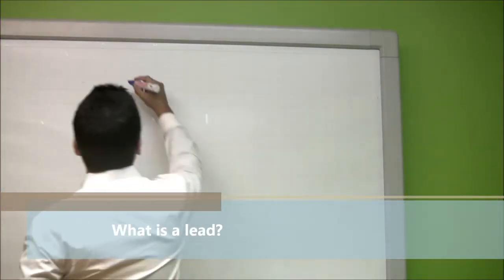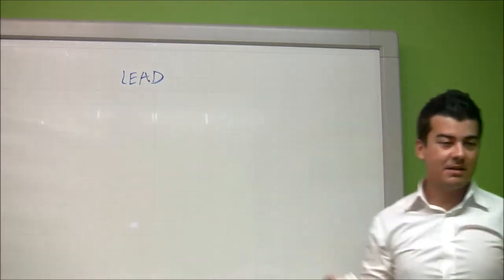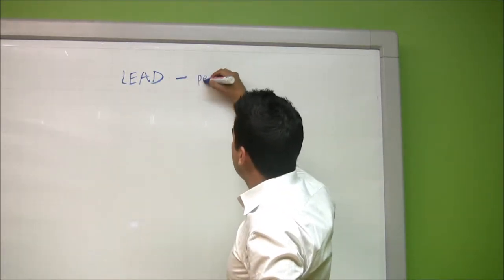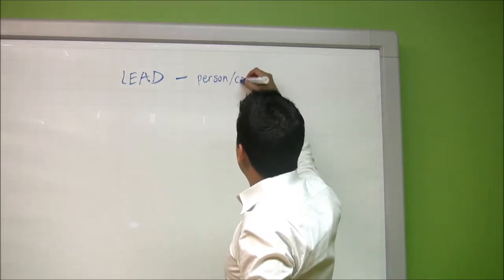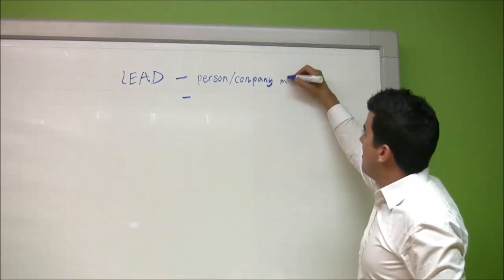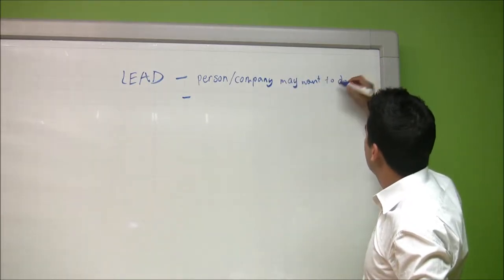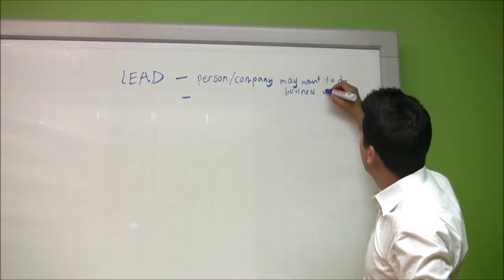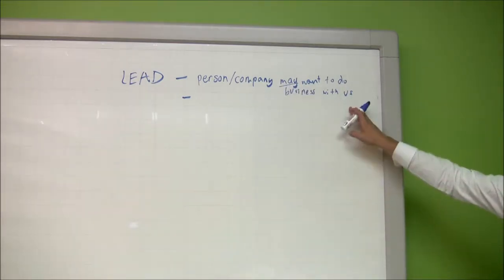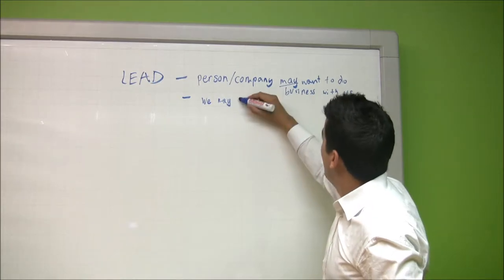So what is a lead? That's the first thing we're going to go through. A lead — there are a lot of different definitions for lead, but the one we use at ITEL is that there are two components to it. It's a person, or a company, or both — a person at a company — where they may want to do business with us. The second component is: we may want to do business with them.